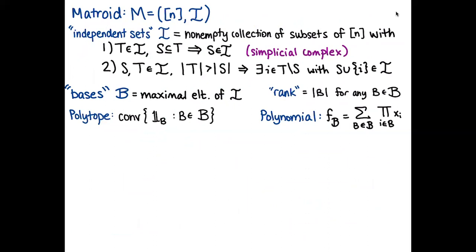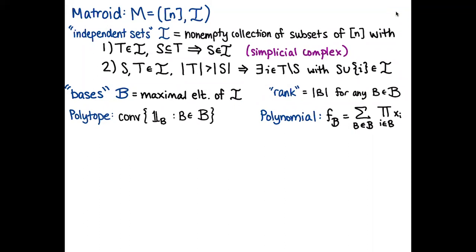A matroid is a combinatorial gadget modeling independence. It has a ground set — for me, one through n — and we write it down in terms of its independent sets, which is a non-empty collection of subsets of one through n with two properties: it's closed under inclusion (making it a simplicial complex), and there's an exchange property: if you have two independent subsets and one is larger, you can pick something from the larger one not in the smaller one and add it to get something independent.